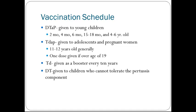Vaccination schedules. DTaP is the most common vaccination among the tetanus, diphtheria, and pertussis vaccines. DTaP is given to children at 2 months, 4 months, 6 months, in the range of 15 to 18 months depending on the physician, and then at school age, which is 4 to 6 years old. Tdap is generally given as a booster to adolescents and pregnant people, generally around 11 to 12 years old, and one dose is given if over the age of 19. Td is given as a booster every 10 years, and Dt is given to children who cannot tolerate the pertussis component.